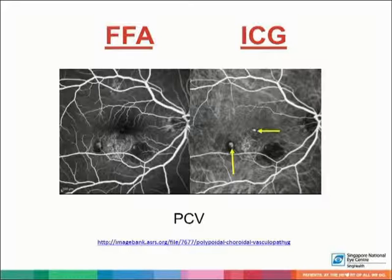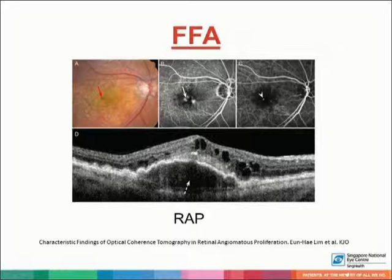This is the fundus fluorescein angiogram on the left side as well as the indocyanine green angiogram on the right side for polypoidal choroidal vasculopathy. On the right side, there is presence of polyps as evidenced by the arrows, which are the grape-like structures suggestive of polypoidal choroidal vasculopathy. The fundus fluorescein angiogram of retinal angiomatous proliferation shows presence of pinpoint hyperfluorescence at the end of the blood vessel, which suggests presence of anastomosis between the intraretinal as well as the subretinal region.